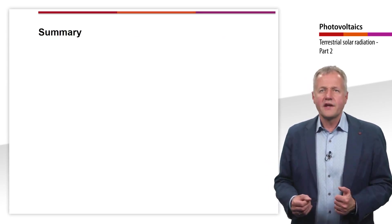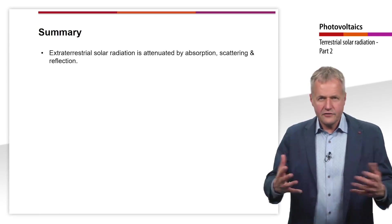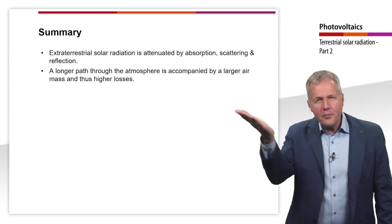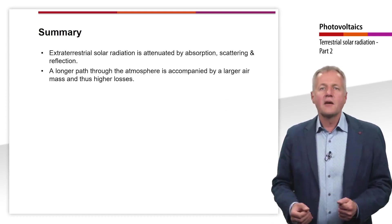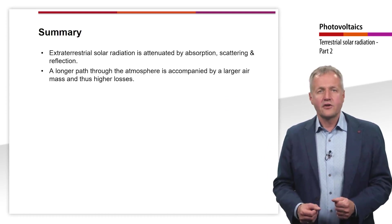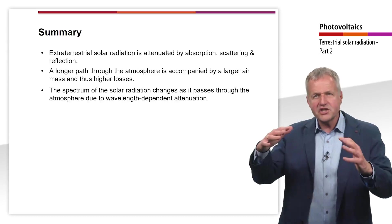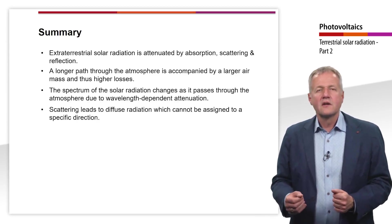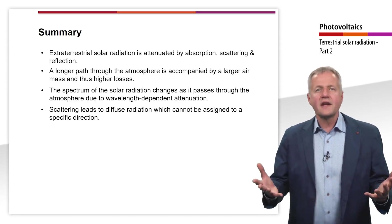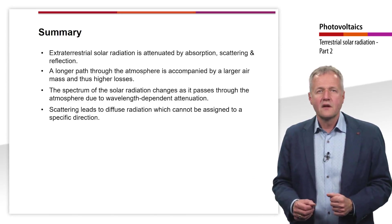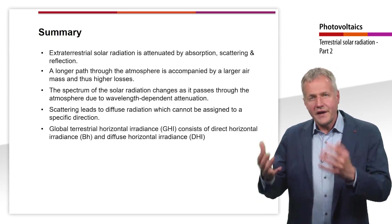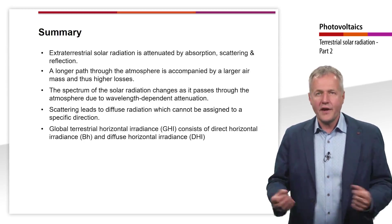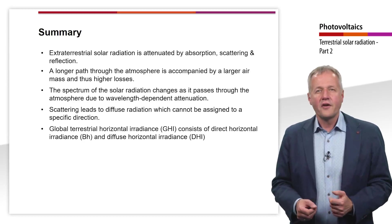The most important takeaways of this teaching unit are: Extraterrestrial solar radiation is attenuated by absorption, scattering, and reflection. A longer path through the atmosphere corresponds to a larger air mass and thus higher losses. The spectrum of solar radiation changes as it passes through the atmosphere due to wavelength-dependent attenuation. Scattering leads to diffuse radiation, which cannot be assigned to a specific direction. Global terrestrial horizontal irradiance consists of direct horizontal irradiance and diffuse horizontal irradiance. Thank you for your attention.